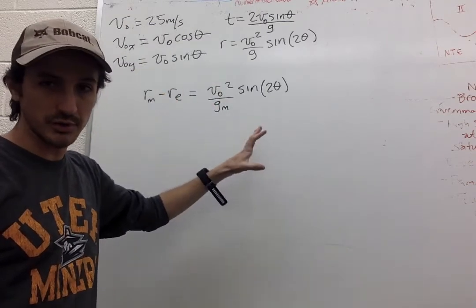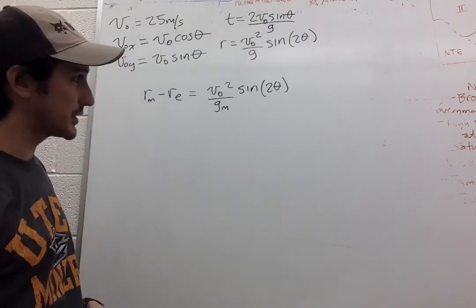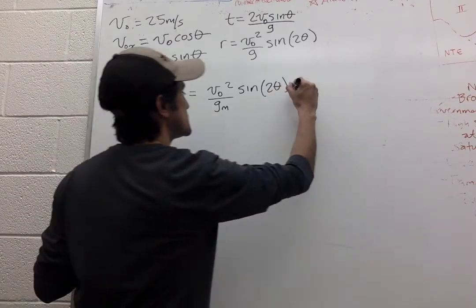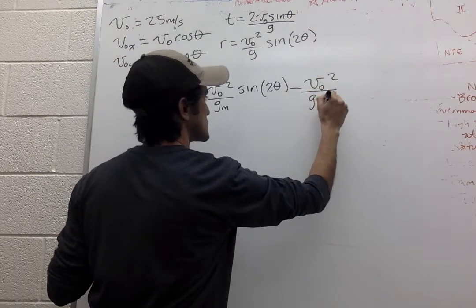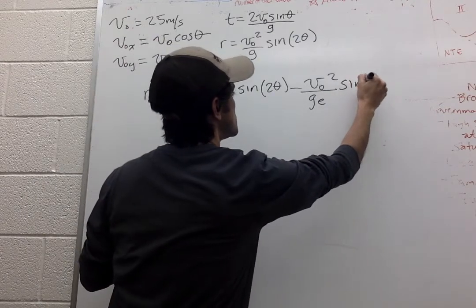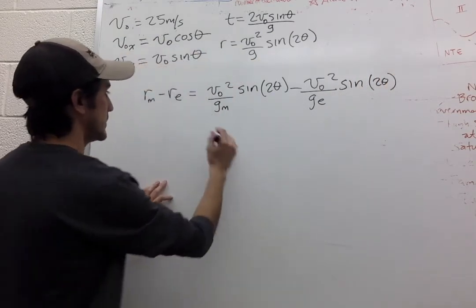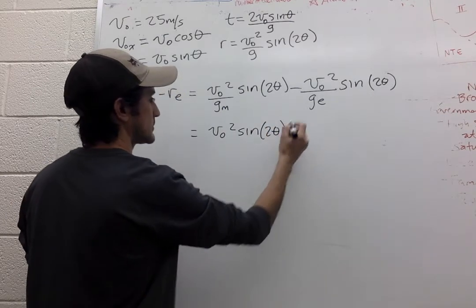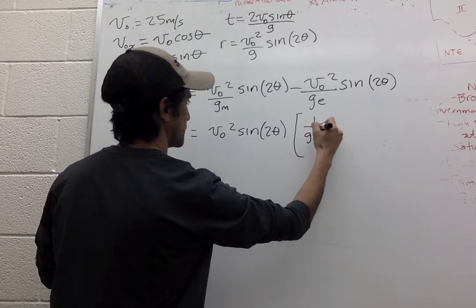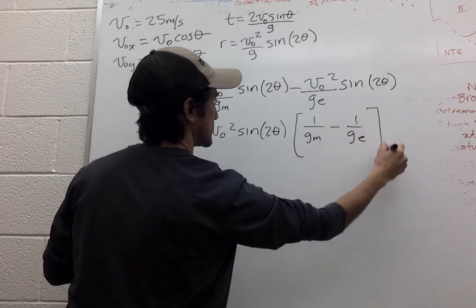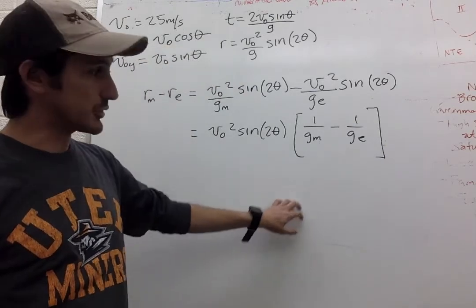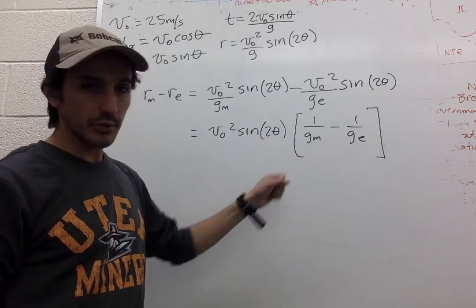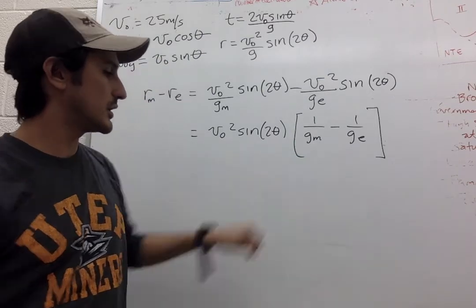But if we keep all your variables in here until the very end, then it is more likely that you're going to get the right solution. So over here we have the range on the moon, here we have the range on earth. You have acceleration due to gravity on the moon and on earth and these two are the same. And we know that the acceleration due to gravity on the moon is one sixth that on earth.